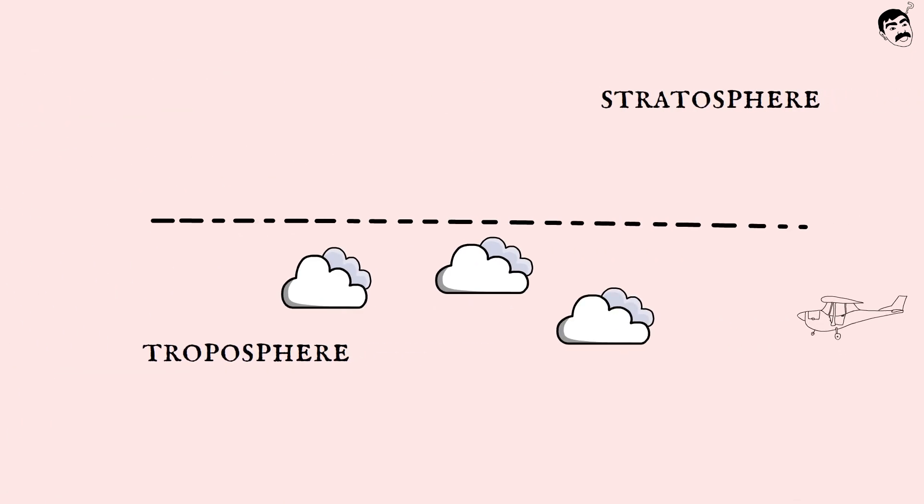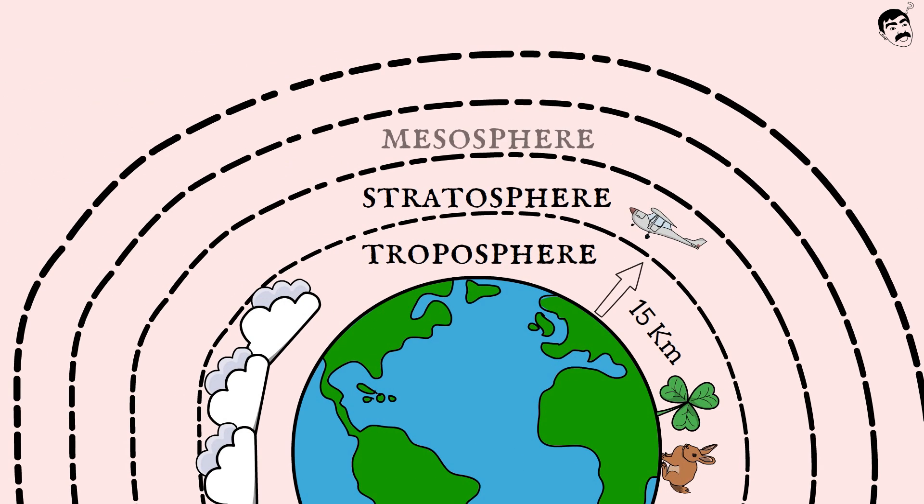In order to avoid turbulence felt in the troposphere, most commercial aircraft usually fly in the stratosphere. The stratosphere, the mesosphere, the ionosphere, and the exosphere lie above the troposphere.